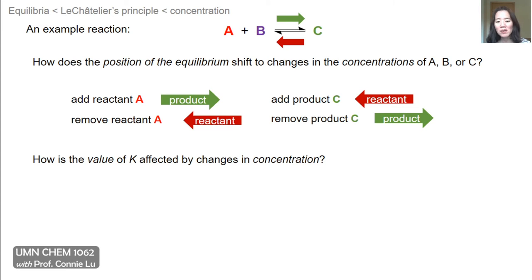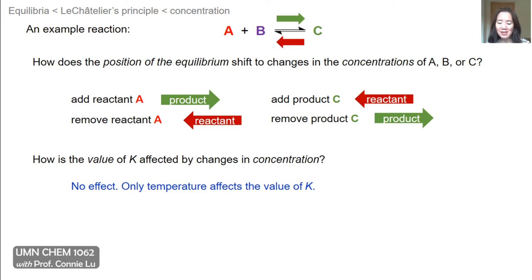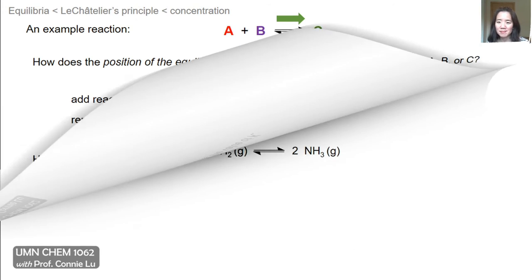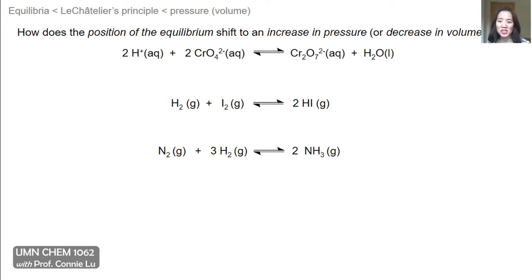How is the value of the equilibrium constant affected by these changes in concentration? There is no effect. The only parameter that changes the value of K is temperature. In the next example we'll discuss pressure and volume together, as these are two interdependent changes. Recall the ideal gas law: if the volume is increased, the pressure will go down, and if the volume is decreased, the pressure will go up.